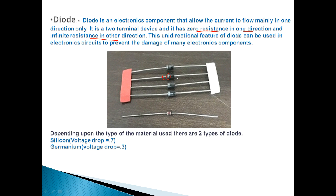This unidirectional feature of the diode can be used in many electronic circuits to prevent the damage of many electronic components. This is a very important point — the basic feature of the diode is its unidirectional property.